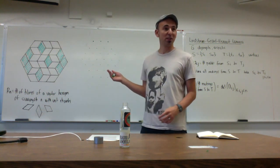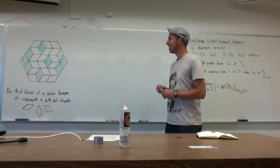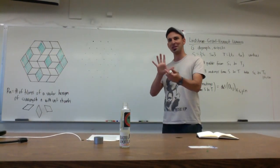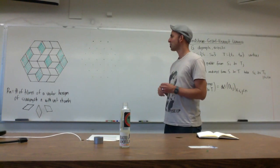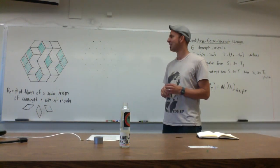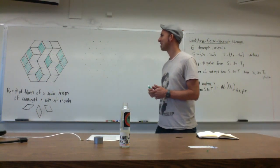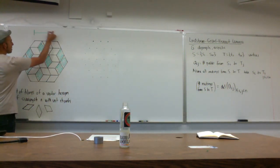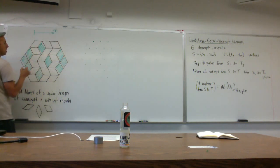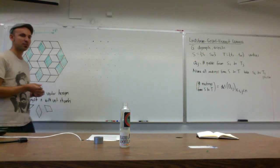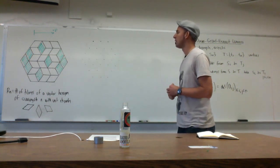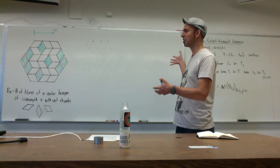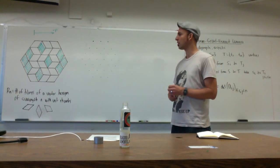Now it looks more three-dimensional. Some of you are seeing one picture and others are seeing the other — whether it's inside out or outside in. We should choose what's the floor and what's the ceiling. Let's say this is up, this is the floor, this is the ceiling. You can think of this as a kind of stack of cubes in a little box.